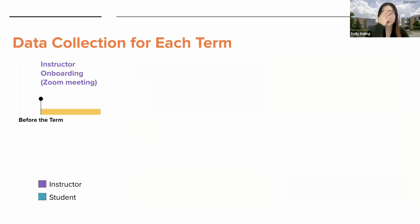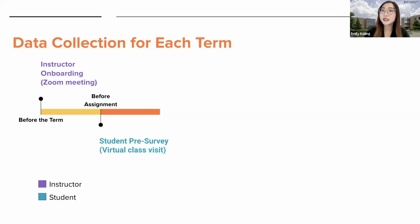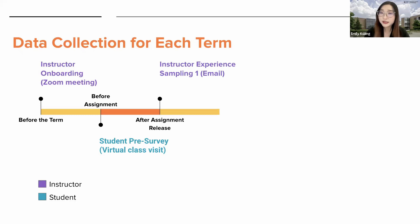For our data collection process, we met with instructors to discuss our project goals and customize the assignment before the term. Before the assignment was released, we did a virtual class visit where we introduced our research and administered a pre-survey to the students. Participation was completely voluntary and we ran a raffle to encourage participation. After the assignment was released, we sent an email to instructors to gather feedback about how they introduced the assignment and whether they covered any additional accessibility content.